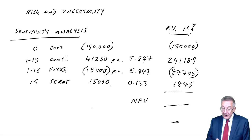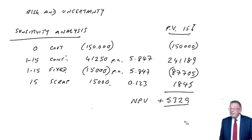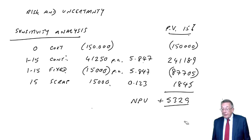The NPV is positive, so we would therefore accept the project. But the problem is, if any of our estimates are wrong — if the contribution, for example, turned out to be only £2 a unit — the NPV would be a lot lower. And if the NPV were ever negative, it would turn out we'd made the wrong decision.